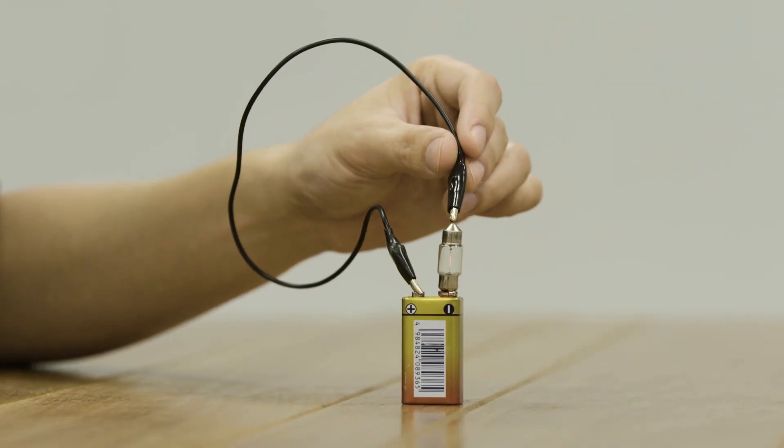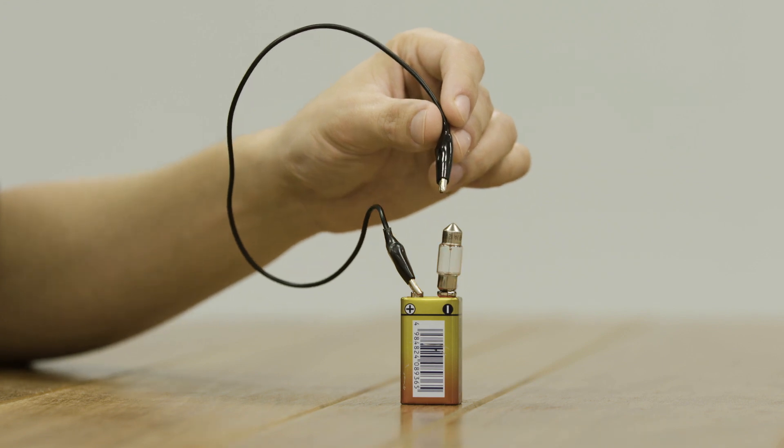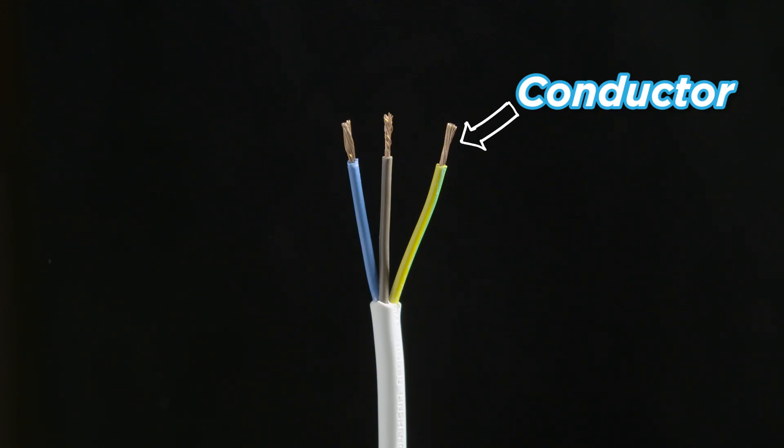To understand how electricity works we first need to know what a conductor is. A conductor is anything that allows electricity to travel along or through it like metal.